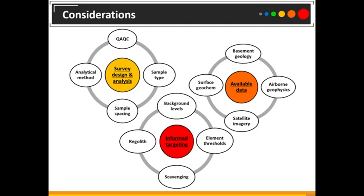Exploration targeting using surface geochemistry is not always a simple or straightforward task. As discussed several times throughout today, there are many things to be considered at both the targeting, the planning, and the interpretation phase to get the most out of that geochemical data you've collected. Although some companies do have a robust and reliable way of targeting using surface geochemistry, my experience is that we actually tend to struggle with the process — mainly because we underutilise the available geophysical and geological data and attempt to interpret our surface geochemical data in isolation.